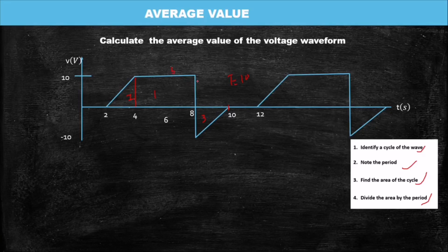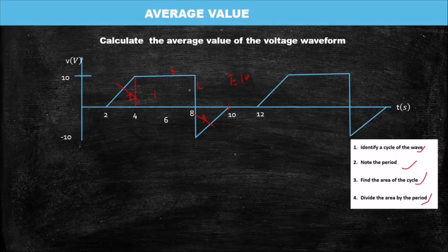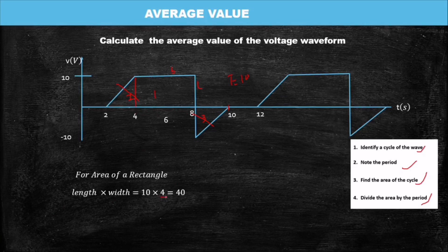The area of a triangle is half base times height. However, this triangle is positive and this one is negative — so they cancel each other. When you find the area of a triangle with positive ten and another with negative ten and sum them, you get zero. That's why they cancel. So we go to the rectangle. The area of a rectangle is length times breadth. The breadth is four — we subtracted to get four — and the height is ten, giving an area of 40.